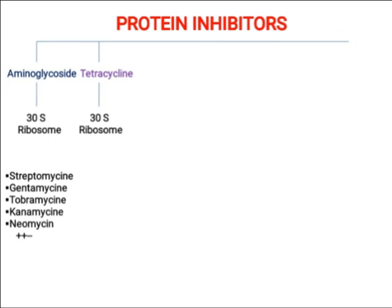Tetracyclines are derived from Streptomyces bacteria. Different examples include chlorotetracycline, derived from Streptomyces aureofaciens, oxytetracycline from Streptomyces rimosus, as well as doxycycline and minocycline.